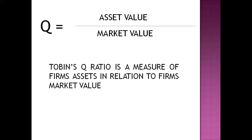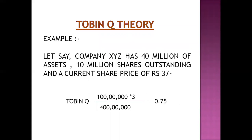Tobin's Q Ratio is nothing but a measure of firm's assets in relation to firm's market value. Let's take an example: company XYZ has rupees 40 million of assets, 10 million shares outstanding, and is currently trading at rupees 3. As per Tobin Q, the market value will be number of shares outstanding multiplied by the current market price of the share. So it will be 10 million shares multiplied by rupees 3, divided by assets of 40 million rupees, which gives the Tobin Q ratio as 0.75.